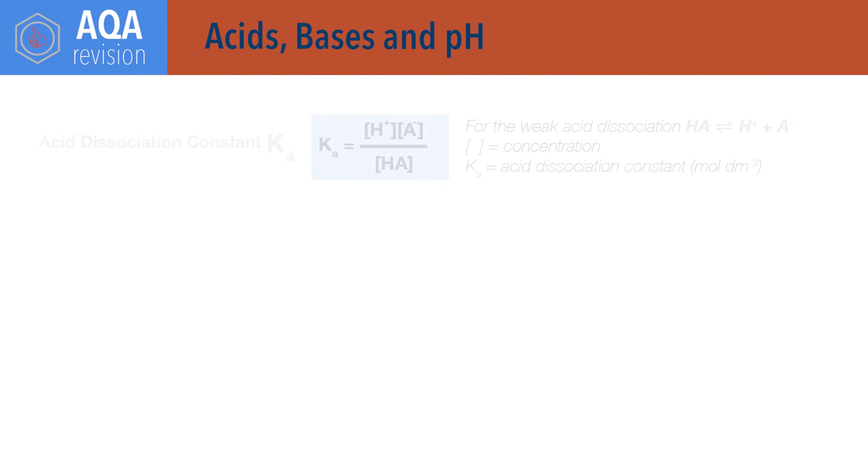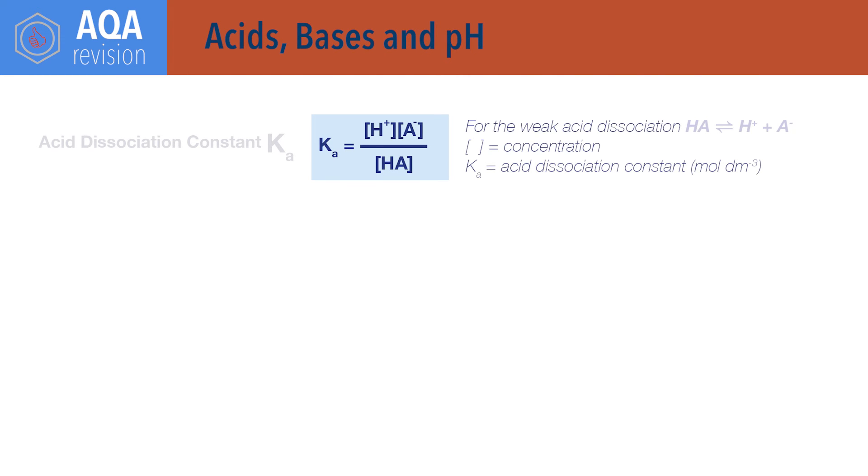For acids, bases and pH, Ka equals concentration of H plus times concentration of A minus, divided by concentration of HA.